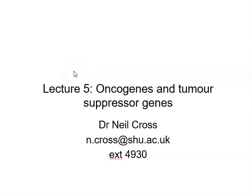This is the fifth lecture from Dr Neil Cross on cell pathology and infection, focusing on oncogenes and tumour suppressor genes. Some aspects may seem repetitive as we'll re-cover PRB and P53 from the hallmarks of cancer, but in a different context — hereditary cancers and different mutation spectrums. Because these pathways are really difficult, it was worth explaining them more than once.